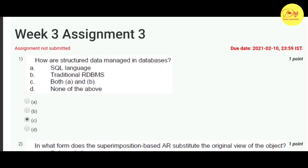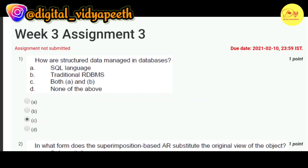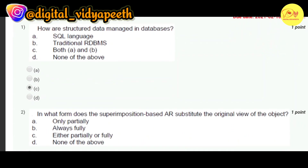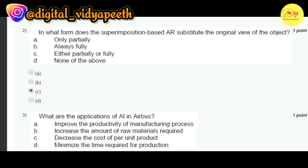Our first question is: how are structured data managed in databases? The correct option is C — both A and B, that is SQL language and traditional RDBMS. Our next question is: in what form does the superimposition-based AR substitute the original view of the object? The correct option is C — either partially or fully.